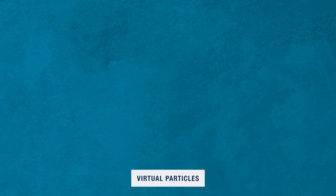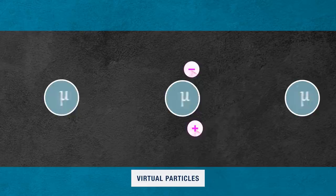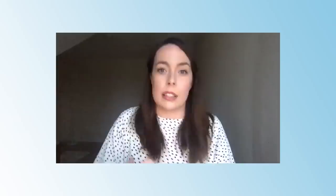They come in and then they vanish again, and then they appear and vanish again. As our muons are going around, they're not only interacting with the magnetic field, but they're also interacting with these virtual particles which come in and out of existence.